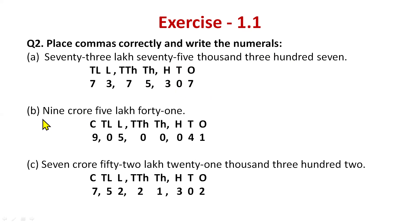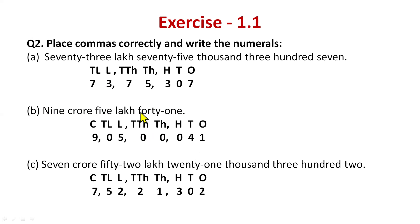Part (b): 9 crore 5 lakh 41. Since it uses lakh and crore, it's the Indian system. Write the place value chart up to crores. 9 crore goes under crores; 5 lakh goes under lakhs, and ten lakhs is zero. There's no thousand, so write zeros under thousands; no hundreds, so zero there. 41: 4 under tens, 1 under ones. Remember to always write the place value chart first.